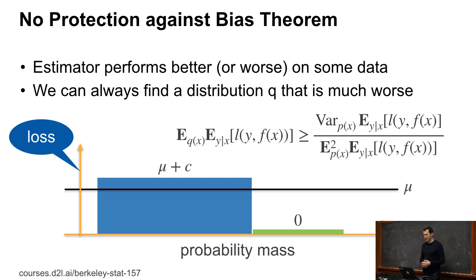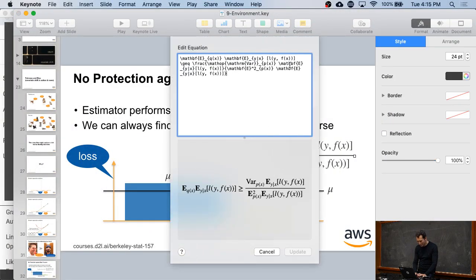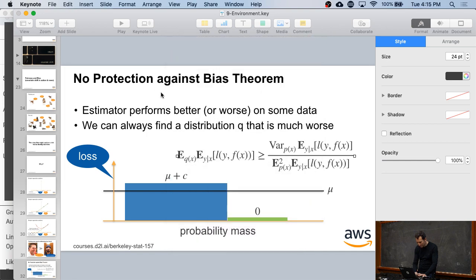But then I have some variance in the accuracy. So this is basically the variance with regard to distribution p of the expected value of how well it performs, the expected loss. Then I can always find some other distribution q such that the performance under this q distribution is worse than the variance divided by the mean. And there's a typo here. There should be no square in the bottom. So let me quickly fix this because this is bad.